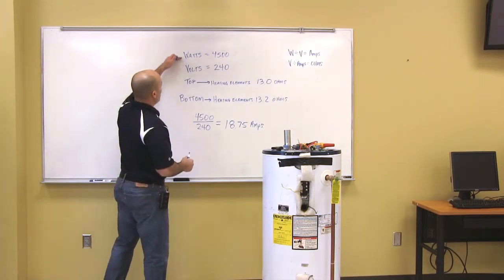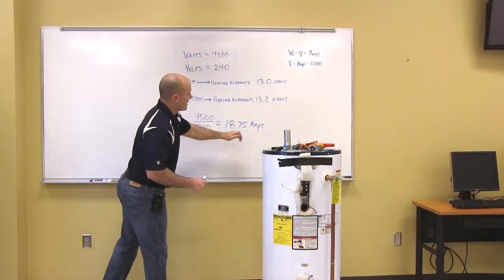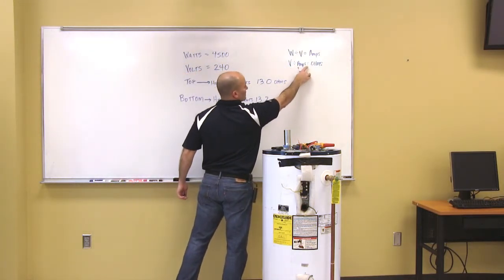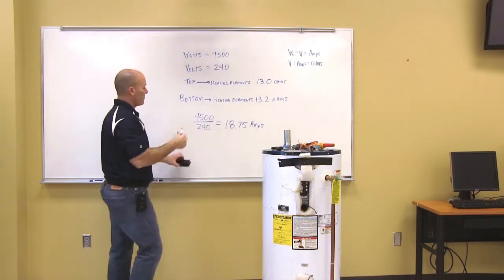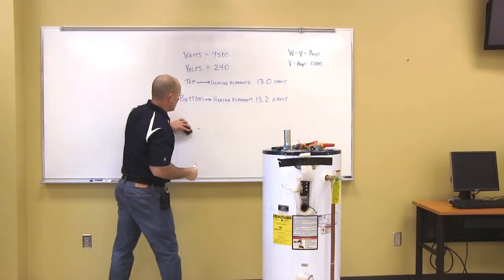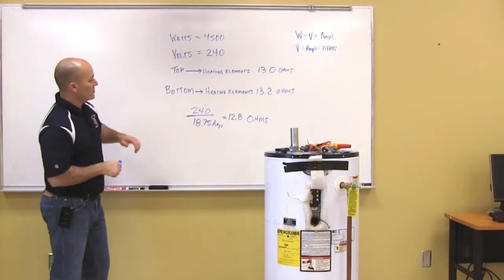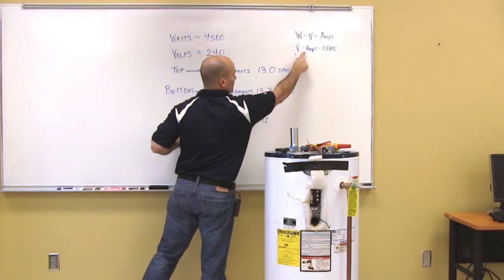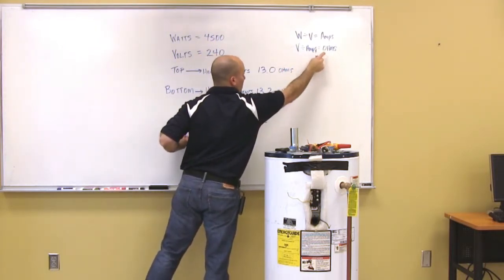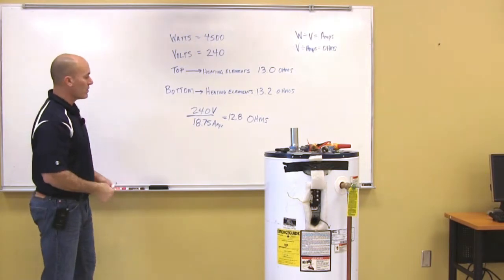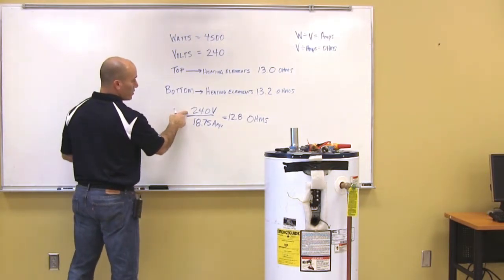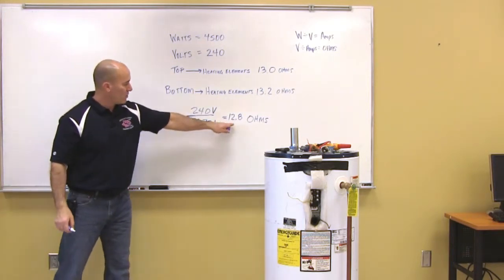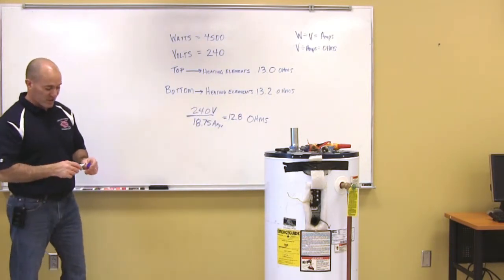Now I've got watts, volts, I've got amps. So if we look at the formula up here, volts divided by amps equals ohms. So now we have to perform that function. This is our voltage, 240, and it's voltage divided by amperage equals ohms. So 240 volts divided by 18.75 amps equals 12.8 on the ohms, the resistance.